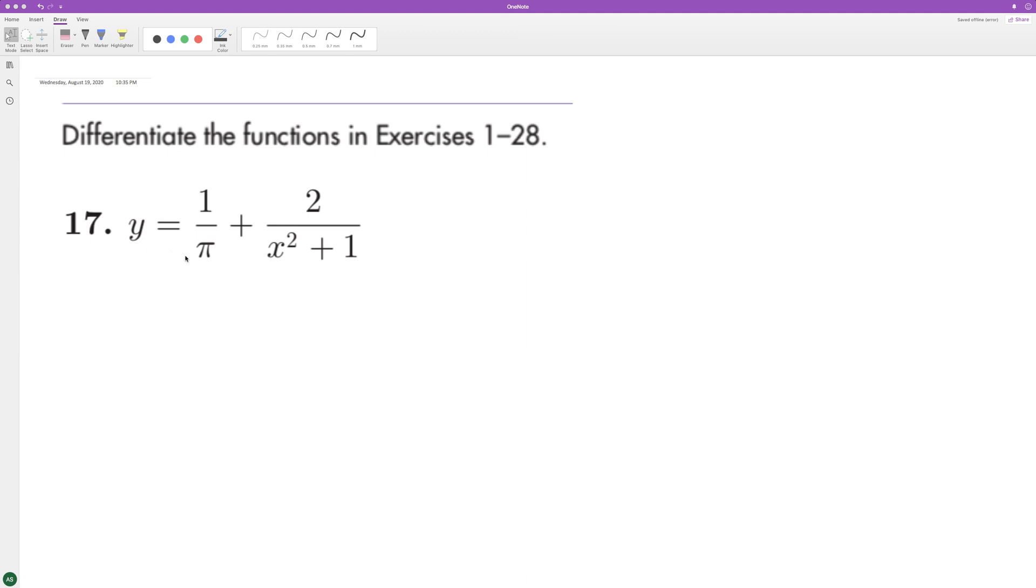So the first part of this equation is pretty simple. One over π is a constant, so the derivative of this is just zero. Plus, what's next here is we can use the quotient rule.